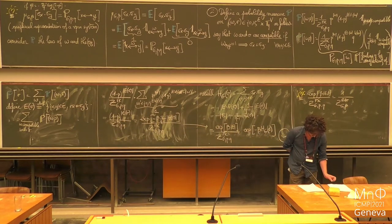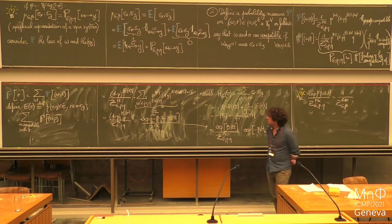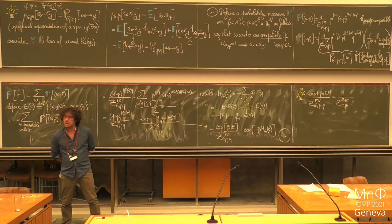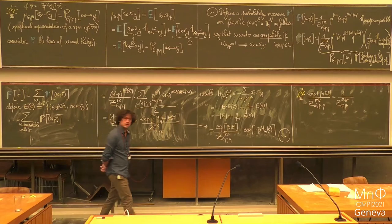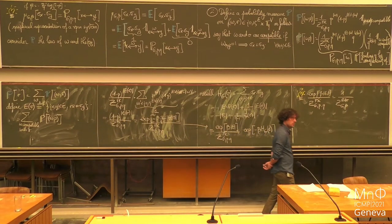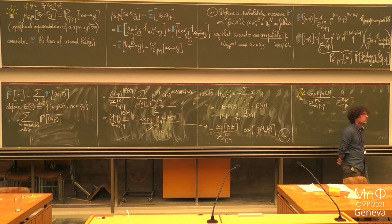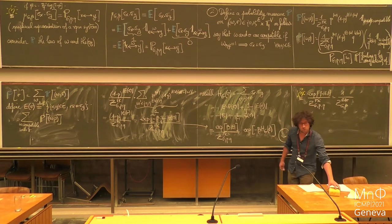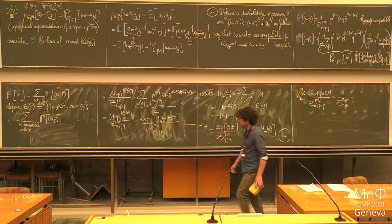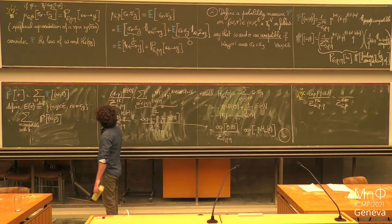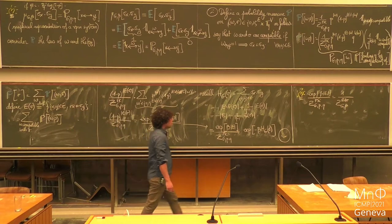That's the Edwards-Sokal coupling. I must say it's maybe a little bit poorly named because it's actually already kind of present in the original paper of Fortuin and Kasteleyn. But Edwards and Sokal really made good use of this and generalized it to other systems. So that's why it's often denoted like that.